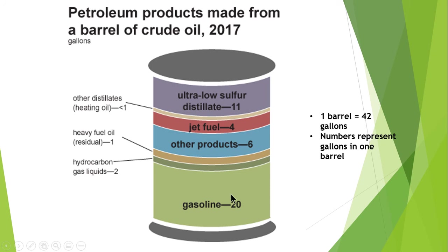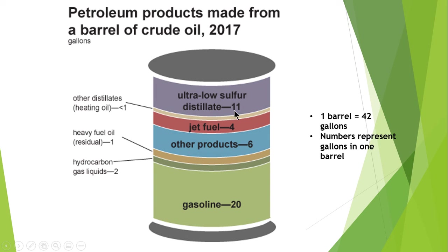From one barrel, there are 20 gallons of gasoline, 2 gallons of hydrocarbon gas liquids, approximately 1 gallon of heavy fuel oil residue, about 6 gallons of other petroleum products like petroleum jelly or Vaseline, 4 gallons of jet fuel, less than 1 gallon of heating oil and other distilled products, and the remaining 11 gallons are ultra-low sulfur distillates.